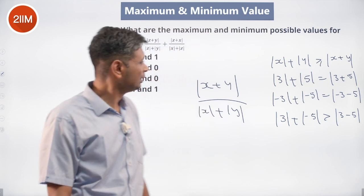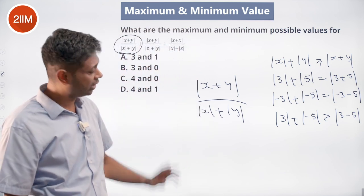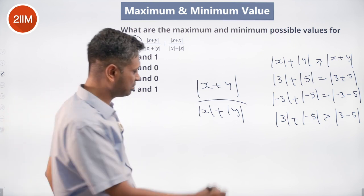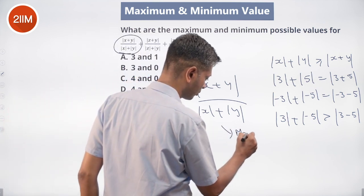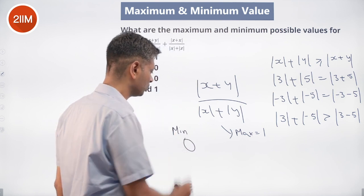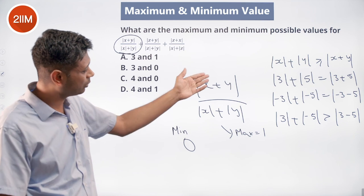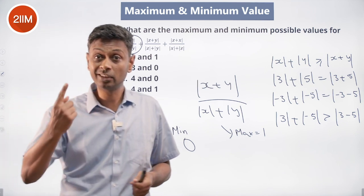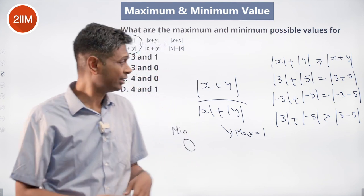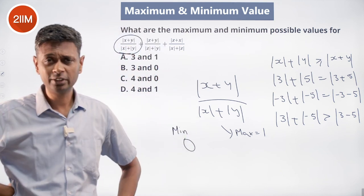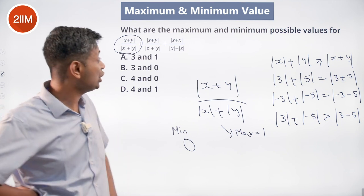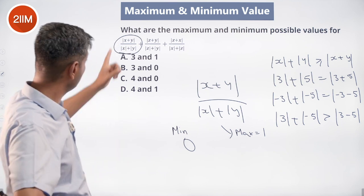So mod x plus mod y is greater than or equal to modulus of x plus y, and equality holds when they have the same sign. For example, mod 3 plus mod 5 equals modulus of 3 plus 5, and mod minus 3 plus mod minus 5 equals modulus of minus 3 minus 5. Therefore, modulus of x plus y divided by mod x plus mod y is at most 1 and at least 0, so each term goes from 0 to 1.